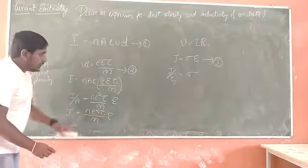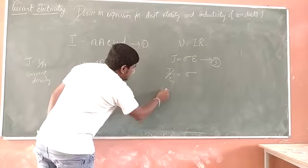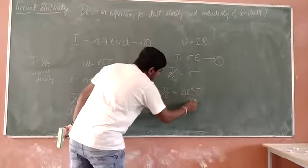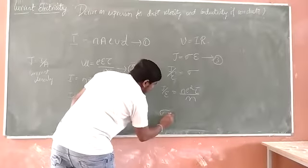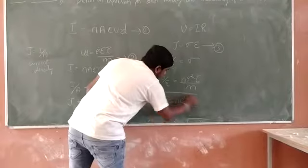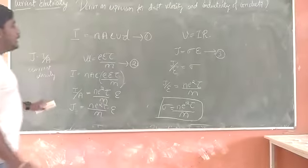Comparing these two equations, J by E is equal to N E square tau by YAM. Therefore, sigma is equal to N E square tau by YAM is an expression for conductivity of the conductor.